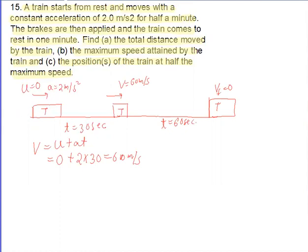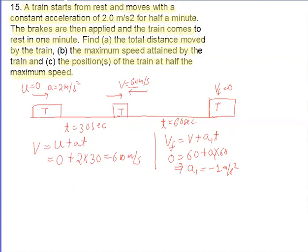So again we write: V final equals initial velocity plus A into T. Final velocity is zero, initial velocity is 60, plus A into T which is 60. Solving this gives acceleration A1 equal to minus 1 meter per second square. Minus means the acceleration is in the opposite direction — 1 meter per second square.